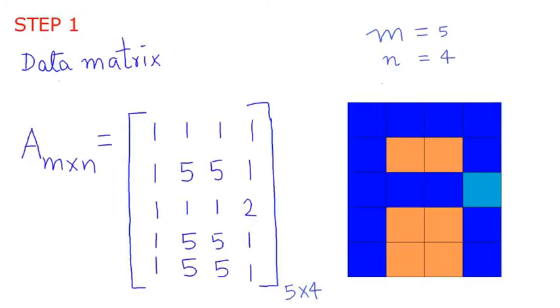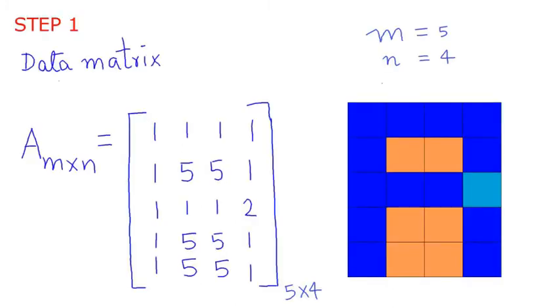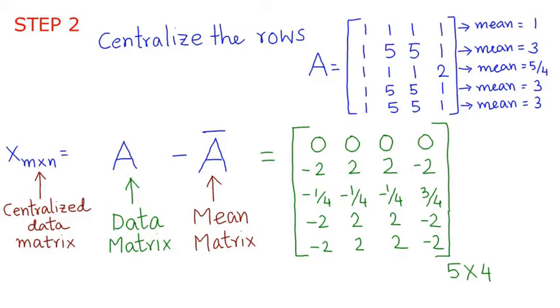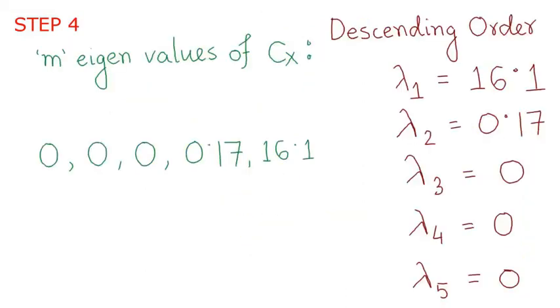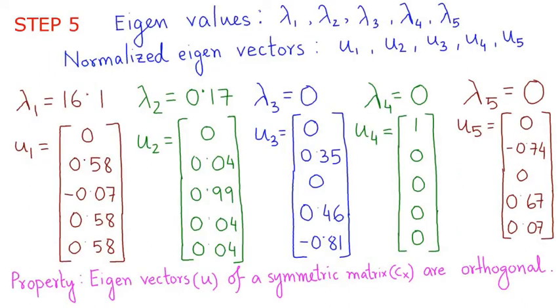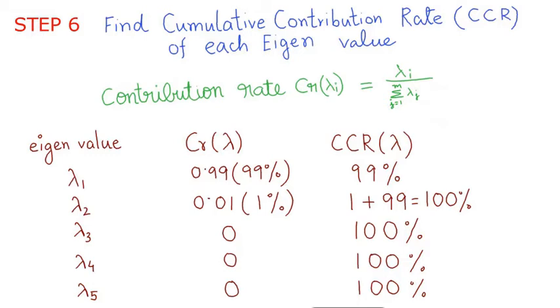Choose a data matrix of M rows and N columns. Centralize the rows, meaning find and remove the mean value from each row. Find the covariance matrix of X transpose. Find the M eigenvalues of CX and rearrange them in descending order. Find the corresponding M orthogonal eigenvectors. Find the cumulative contribution rate of each eigenvalue.